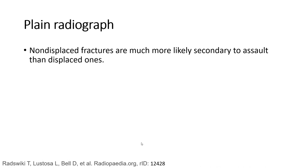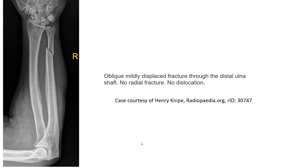Non-displaced fractures are much more likely secondary to assault than the displaced form. This is an example of the nightstick fracture where we can see the oblique minimally displaced fracture through the distal ulna, with no radius fracture and no dislocation.